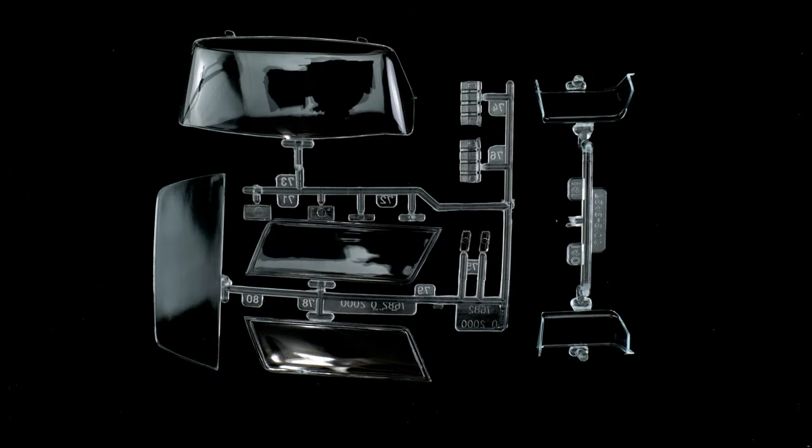Now we're going to take a look at the clear parts trees. On the left we have for the Bronco, your windows. Headlight lenses, tail light lenses.